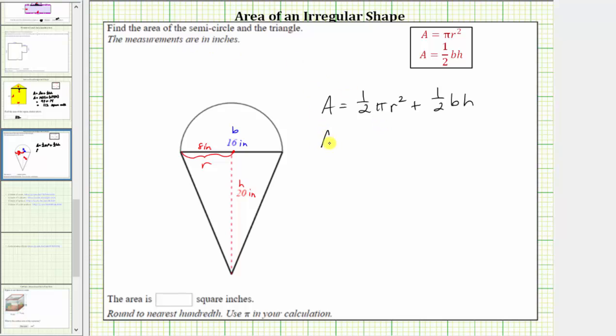The total area is equal to 1/2 times pi, times the radius squared, which should be the square of eight inches, plus 1/2 times the base of 16 inches, times the height of 20 inches.